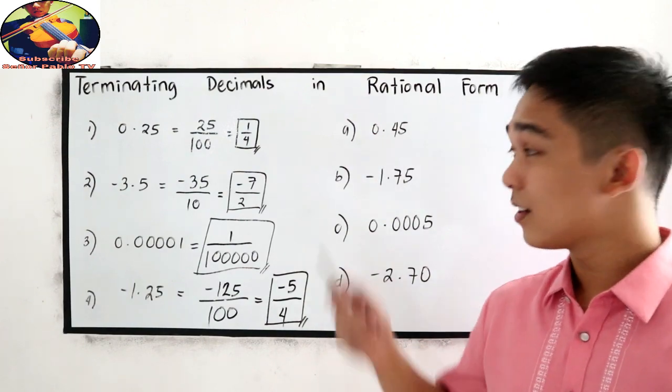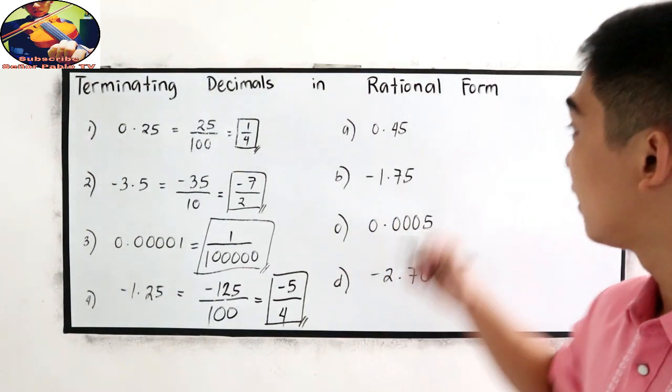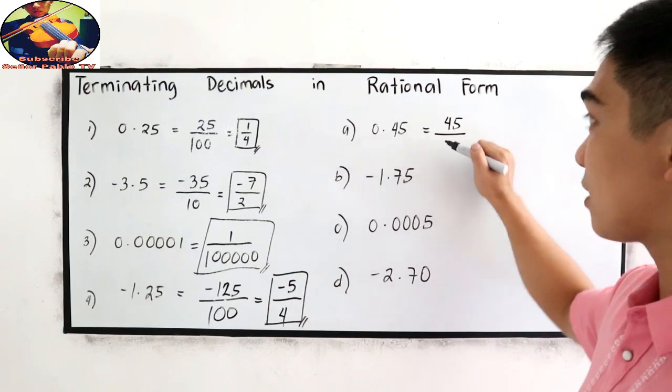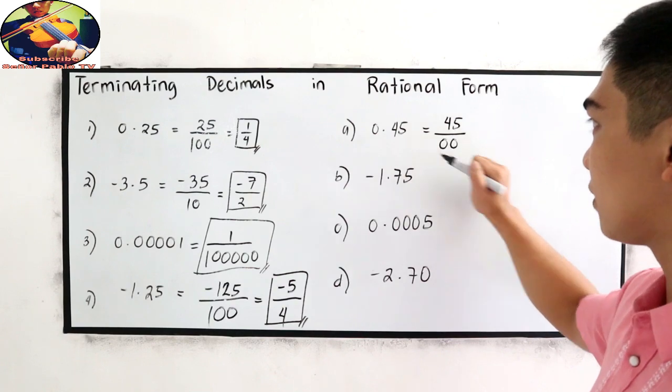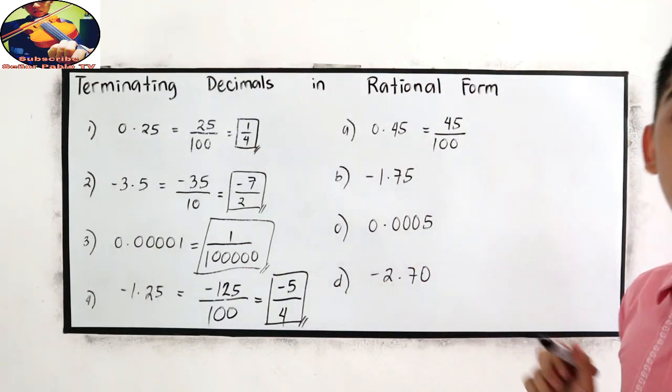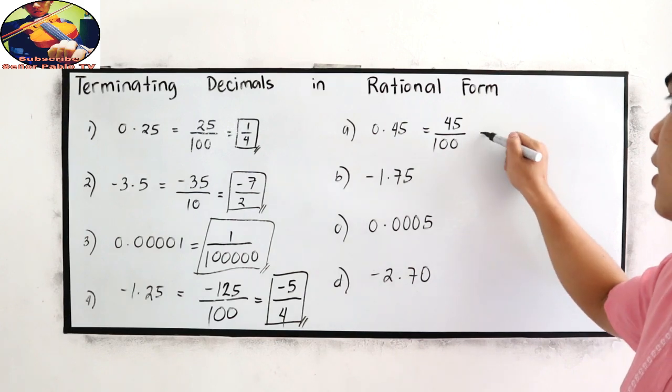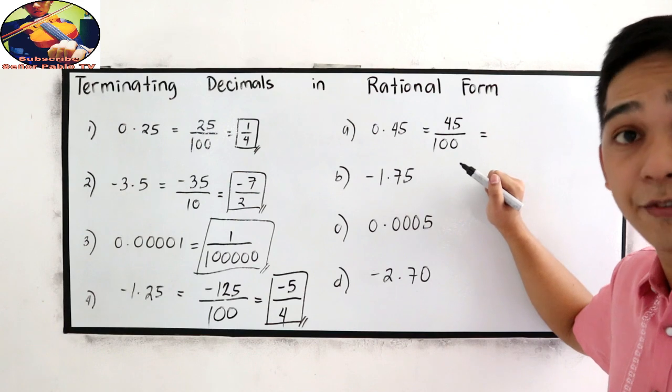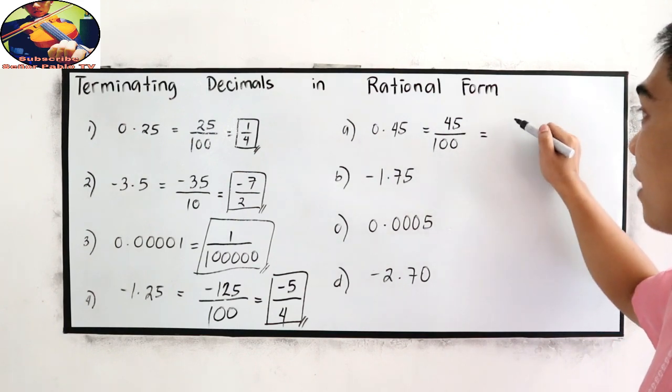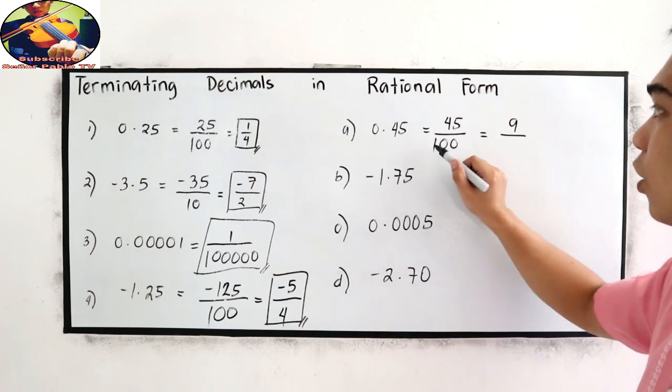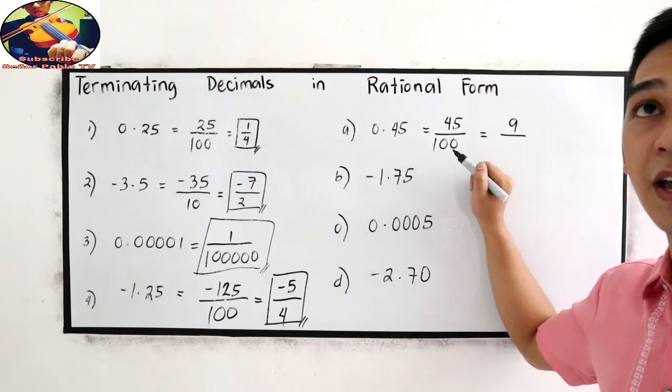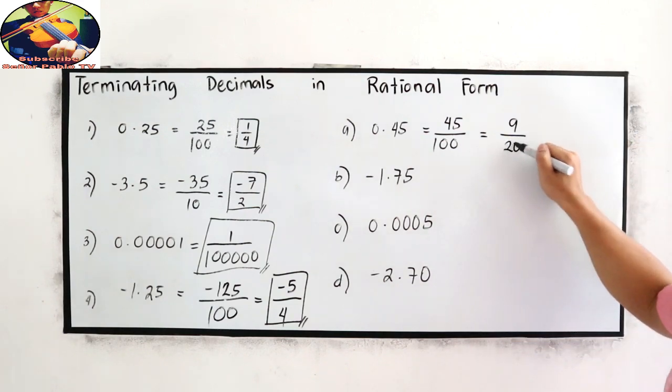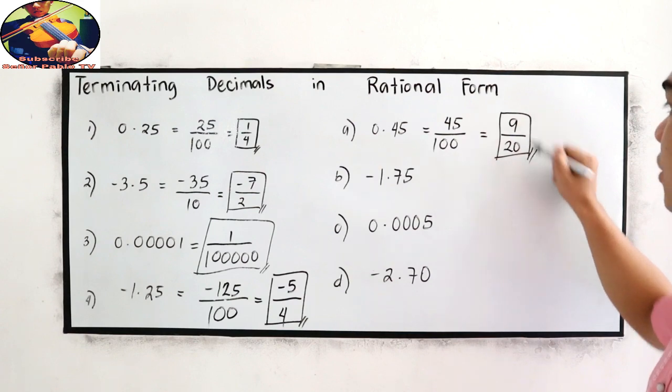This time, let's check letter A. This is equivalent to 45 over two decimal places. 1, 2. So 45 over 100. Divisible by 5. So 45 divided by 5, that is 9, over 100 divided by 5, that is 20. So the rational form is 9 over 20.